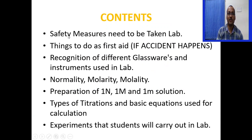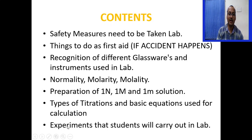Today we will talk about the safety measures needed to be taken inside the chemistry lab, and what are the things you need to do if some accident occurs. We will recognize different glasswares and instruments generally used in the lab, and discuss normality, molarity and molality concepts — how to prepare one normal, one molar and one molal solution — and different types of titrations and basic equations used for calculation, and what experiments students generally carry out inside the lab.